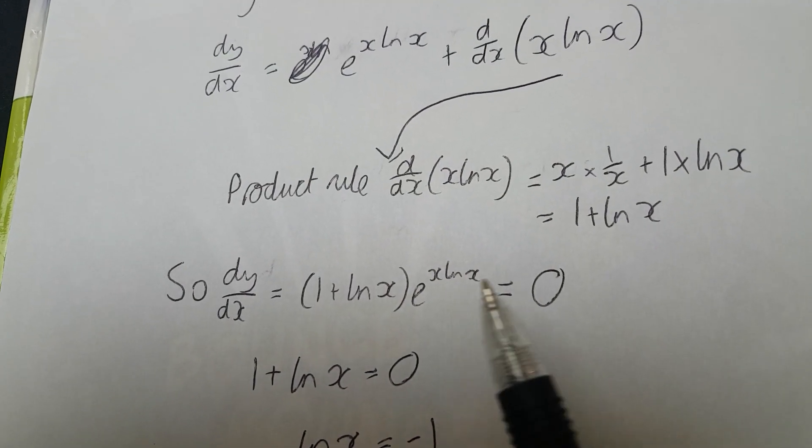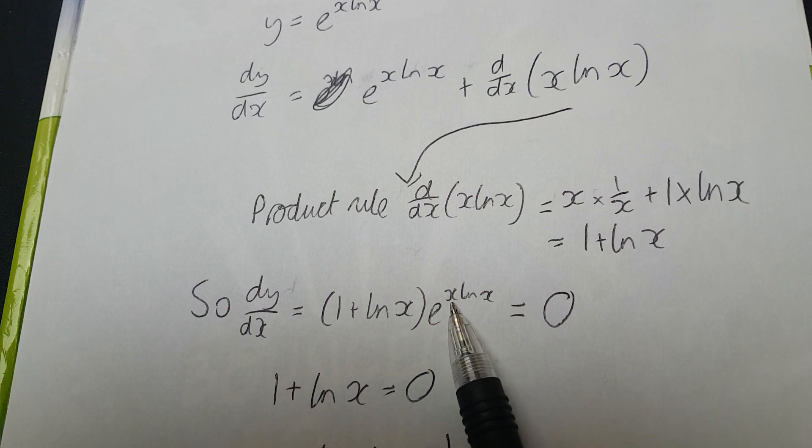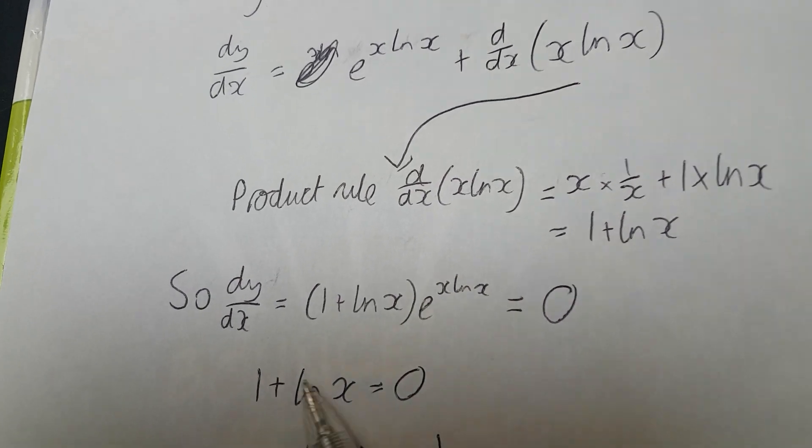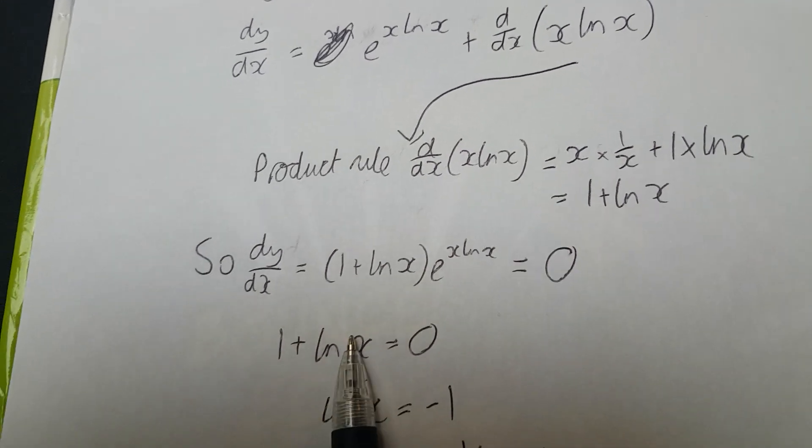We know that e to the anything can never equal 0, but we know one of these two has to equal 0, because it's a product equaling 0. So, 1 plus natural log x equals 0.